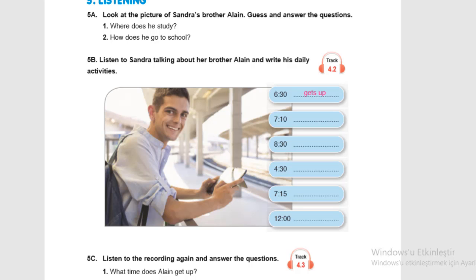Alright everybody, this class is for 5th grade and we are on page 55. Please open your books and go to page 55. The first activity is listening. But before we listen to the track, we will have a look at the questions. It says look at the picture of Sandra's brother Elaine. So here we are seeing the picture of Elaine, and guess and answer the questions.